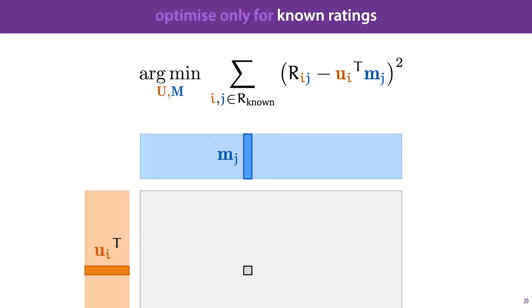So, the solution is simple. We define the loss only for the known ratings. Note that this minimization objective is the same that we saw before, except i and j now iterate only over those elements in the matrix for which we actually know the rating. This can make optimization a bit more difficult, but it can lead to better models.